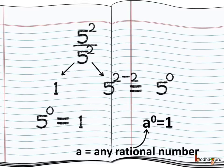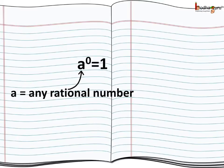It means 4 to the power 0 is equal to 1. Same way, 5 squared divided by 5 squared is 5 to the power 2 minus 2, which is equal to 0, so 5 to the power 0 is also equal to 1.